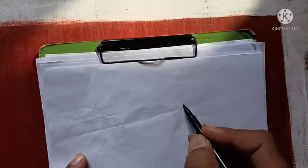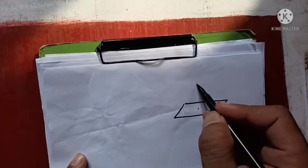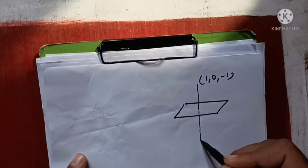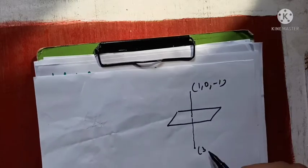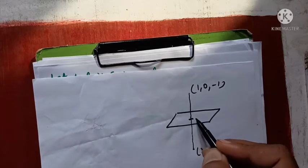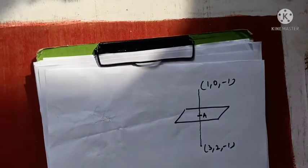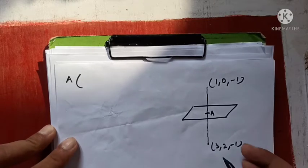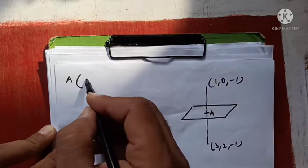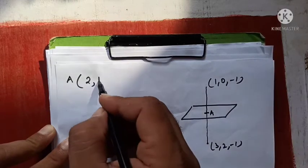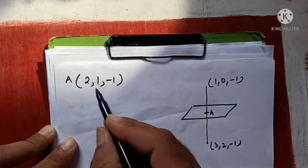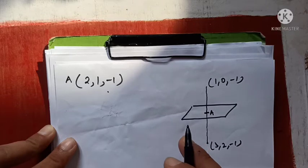So first we know that this is about a plane. I will construct a plane here. I am calling this point A — this will be the midpoint of the line joining the two given points, and this midpoint will lie on the plane. To find the coordinates of A, we apply the midpoint formula: (3+1)/2 = 2, (2+0)/2 = 1, (-1 + -1)/2 = -1. So point A is (2, 1, -1) and it lies on the plane, meaning it satisfies the plane's equation.